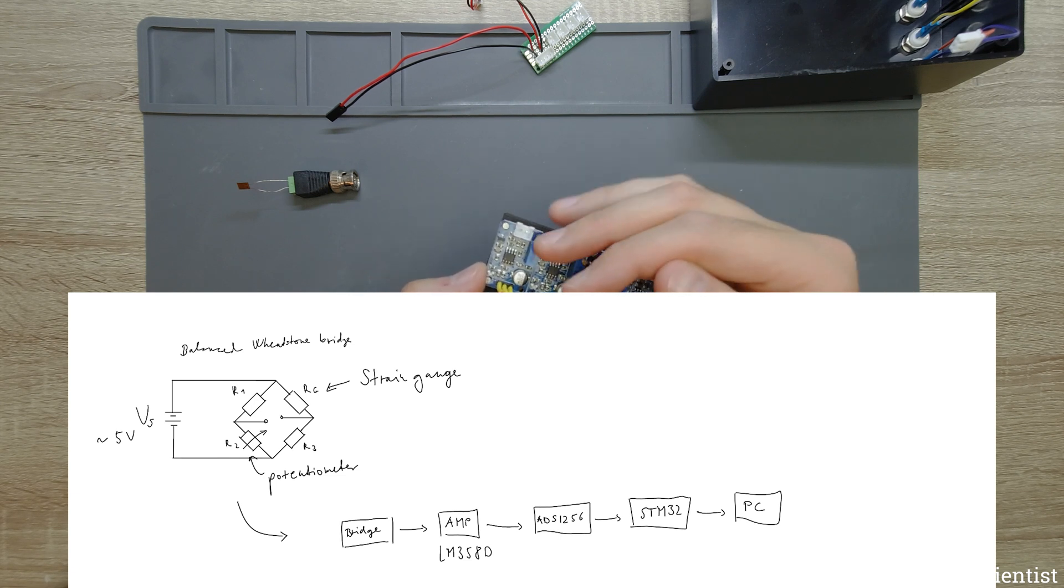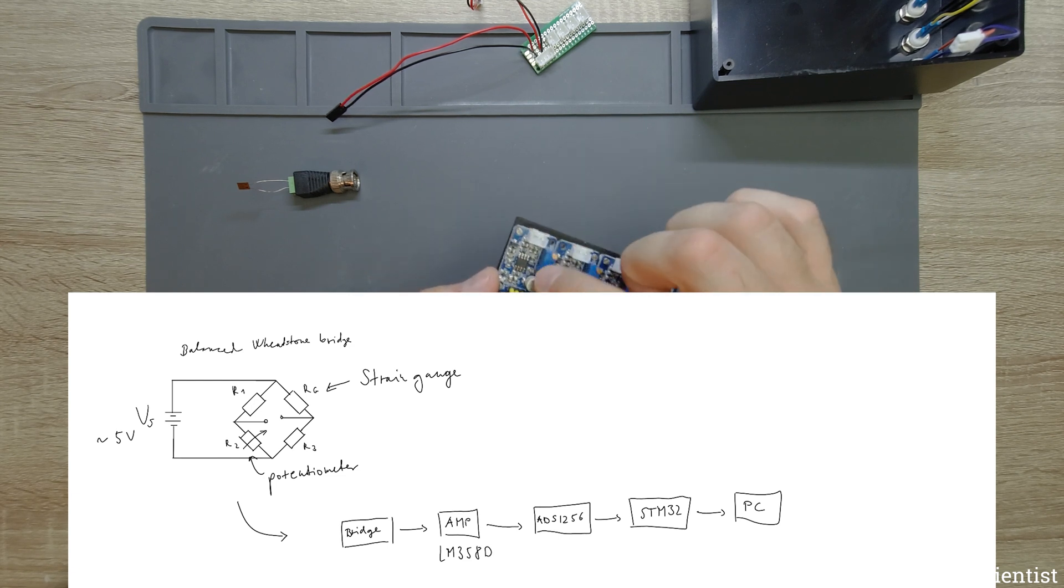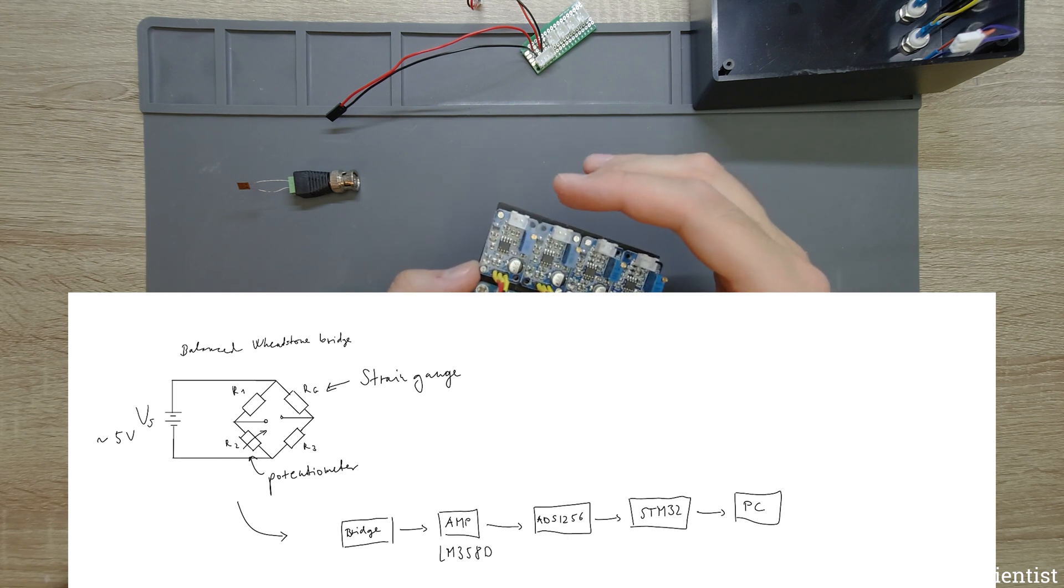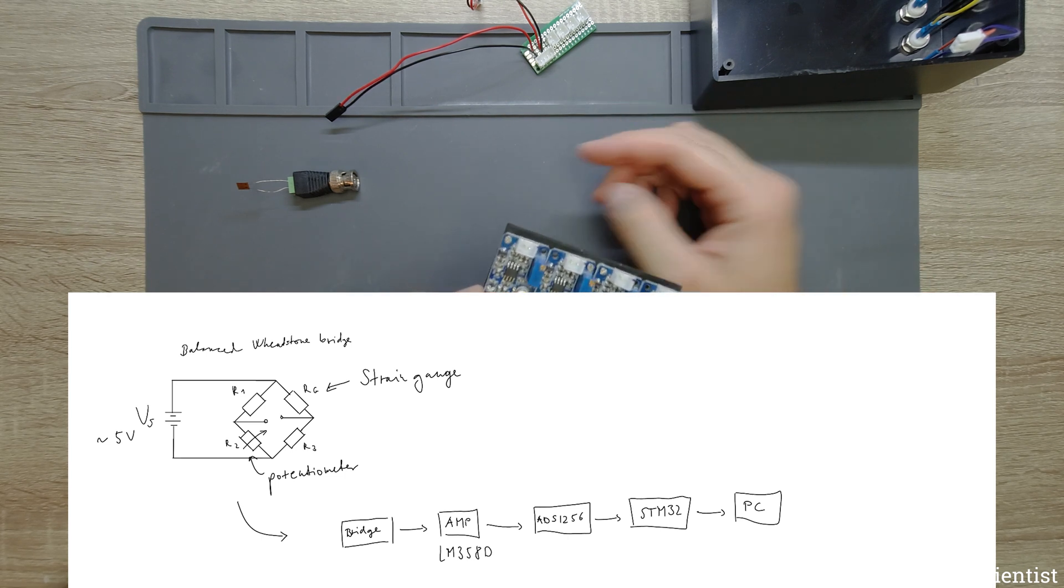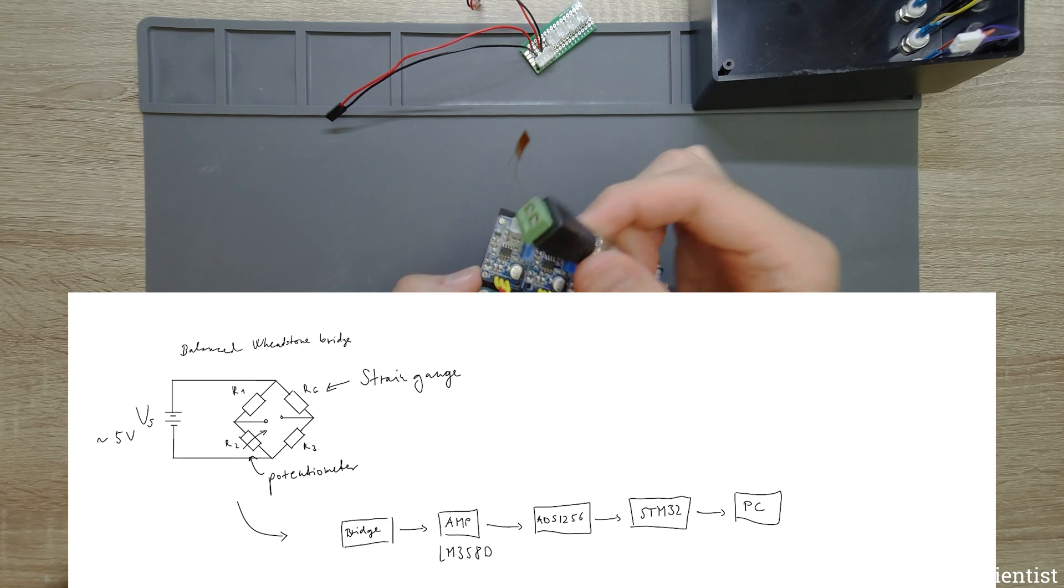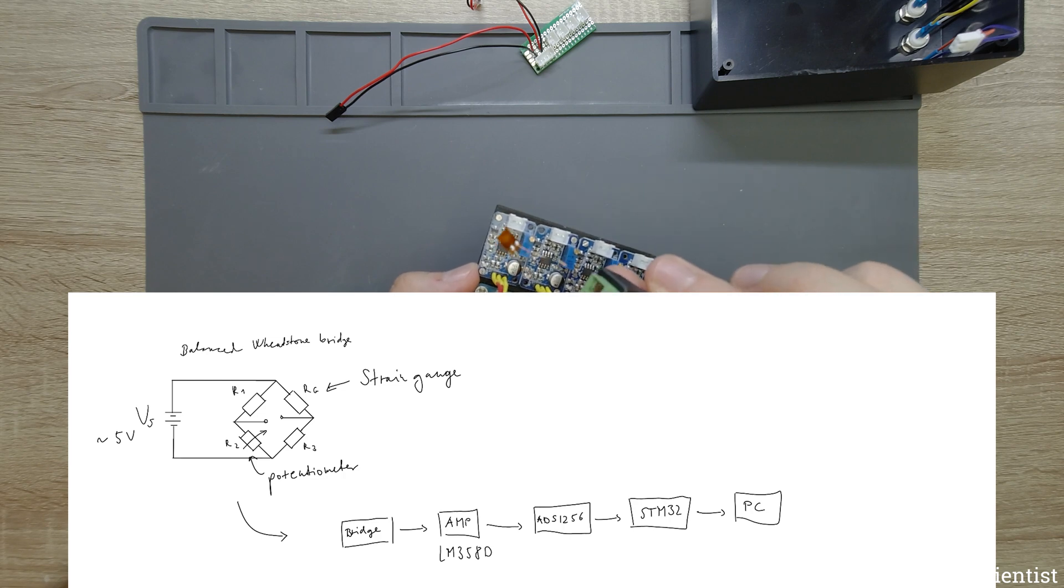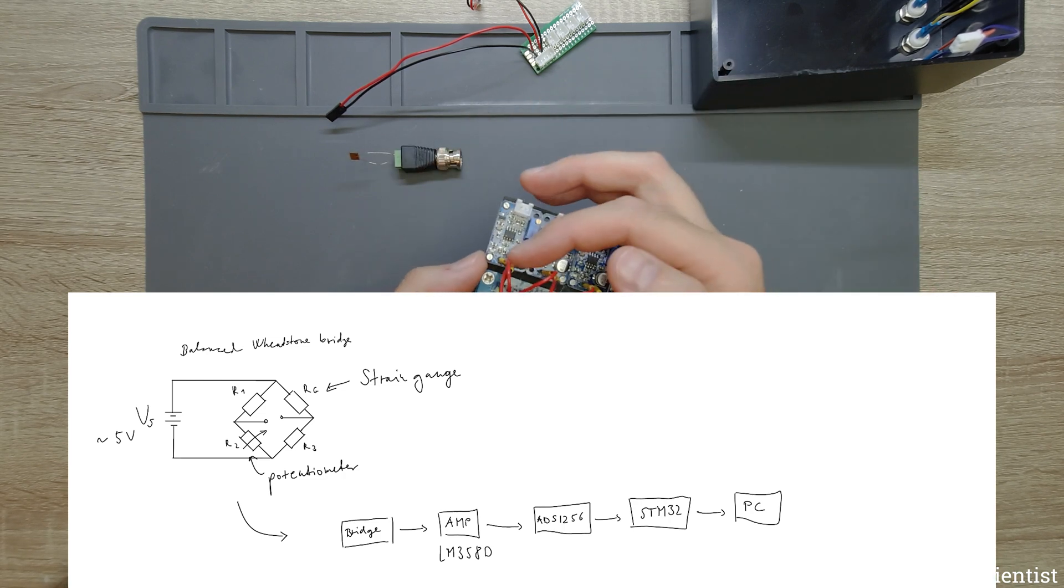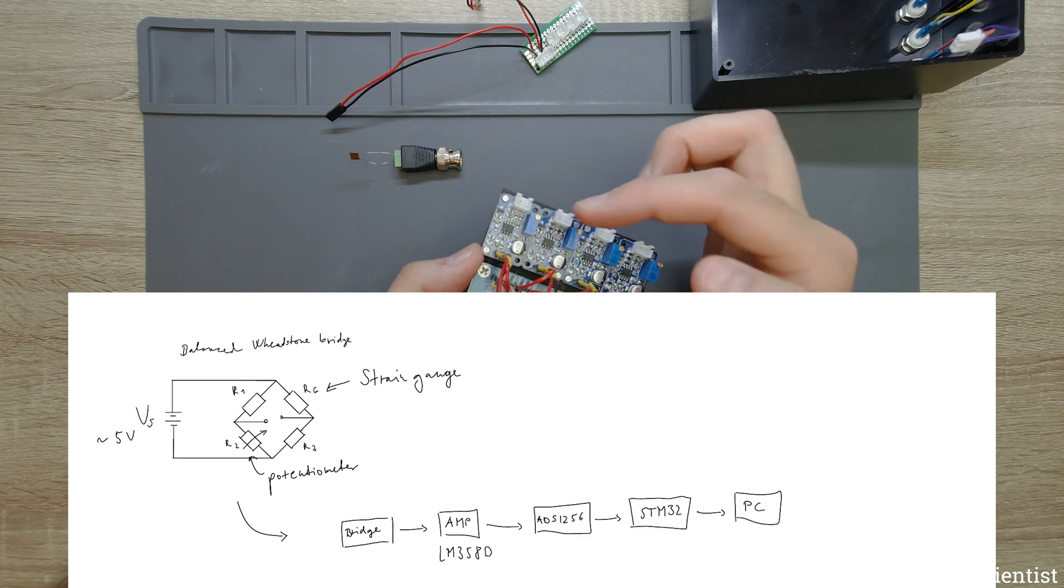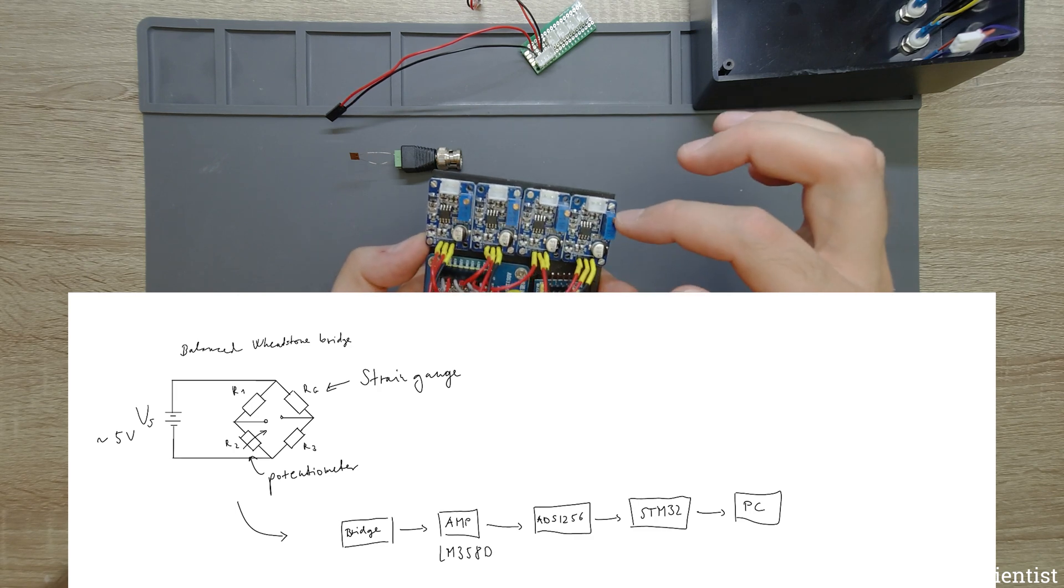The output voltage of the Wheatstone bridge is amplified by an op amp here and that is directed to the output. In a nutshell, when you change the deformation of this strain gauge then you will receive a proportional response as a voltage on the output of these circuits.